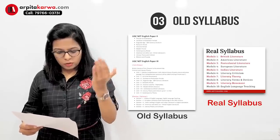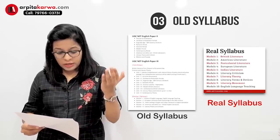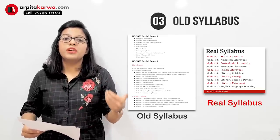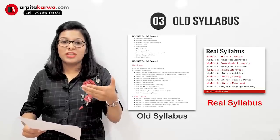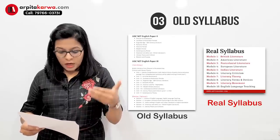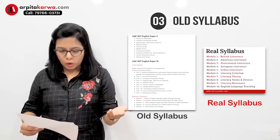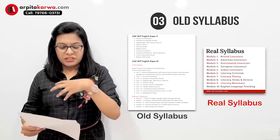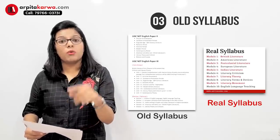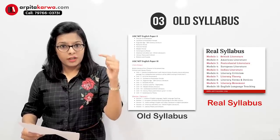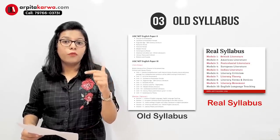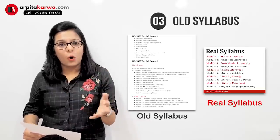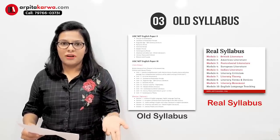If you look at the few periods mentioned in paper two — Chaucer to Shakespeare, Jacobean to Restoration, till the contemporary period — you'll find that all these periods are covered in British Literature, which is my module one. Moving forward: American Literature is module two. Then non-British literature — very simply they wrote 'non-British,' which is going to cover all four modules: module two American, module three postcolonial, module four European, and module five Indian. So anything written across the globe except Britain is non-British literature. In just one word they have covered all four modules. Then we have literary theory and criticism, simply modules six and seven. Rhetorics and prosody — this is what I know as literary terms and devices, covered in module eight.